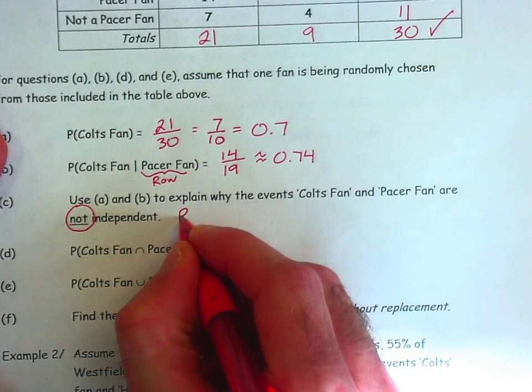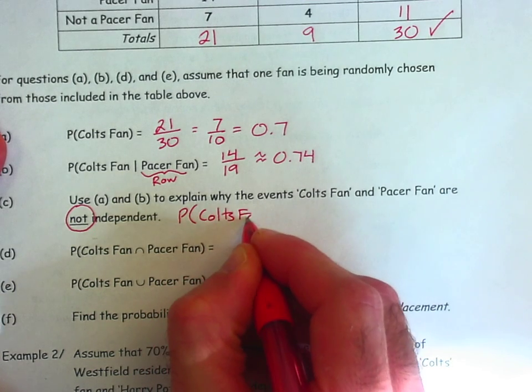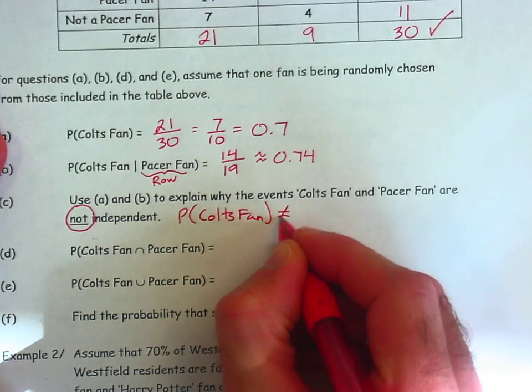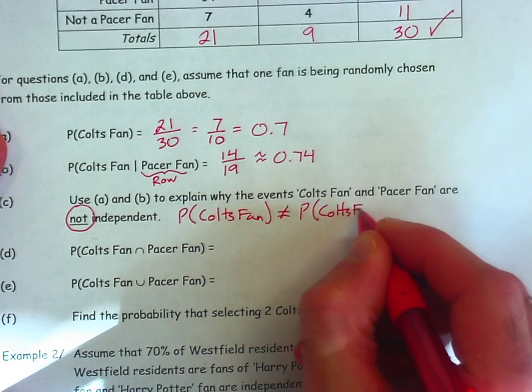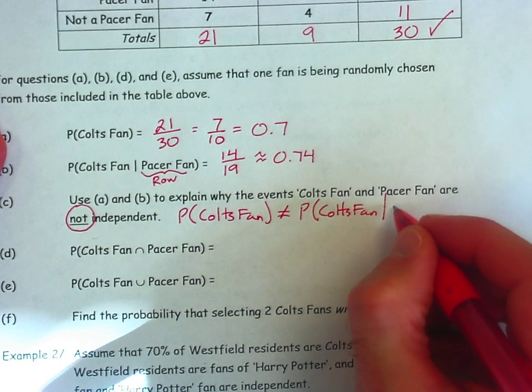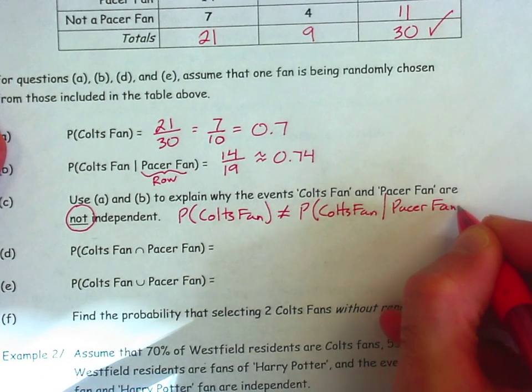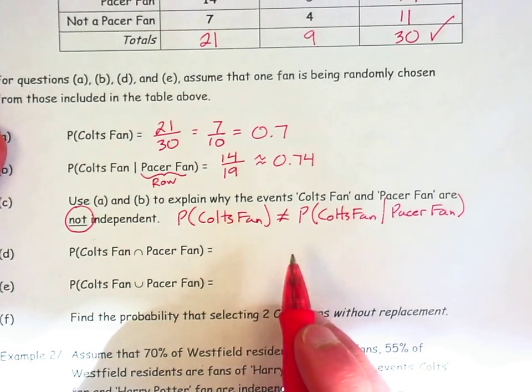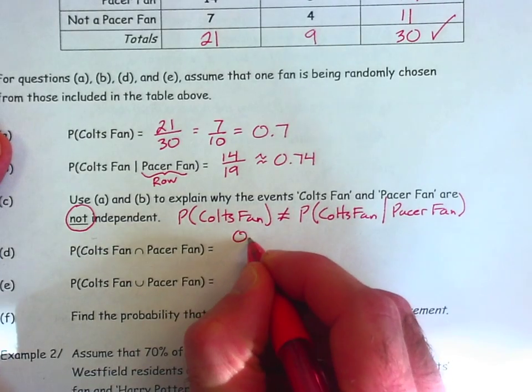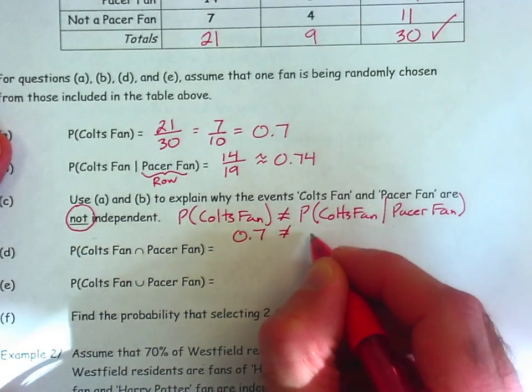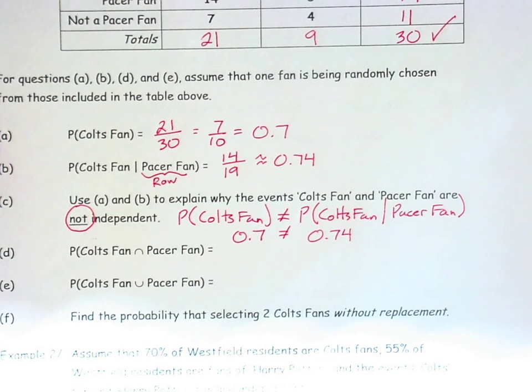So essentially, I can see that the probability of a Colts fan is not the same as the probability of being a Colts fan under the condition that I already know that one is a Pacer fan. So these would have to be equal in order for us to have independence between these two events. And clearly, 0.7 is not the same as 0.74. That's one important way to look at independence.